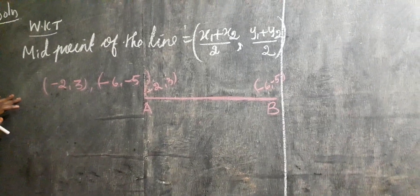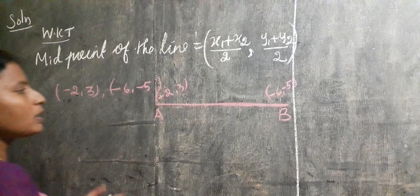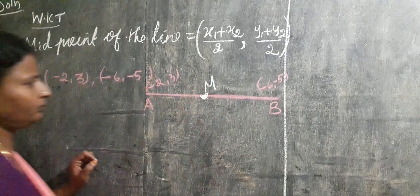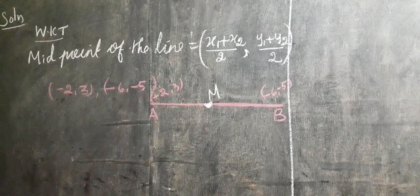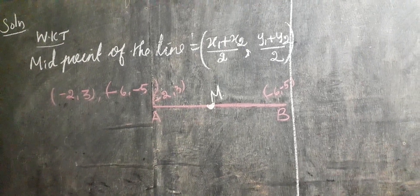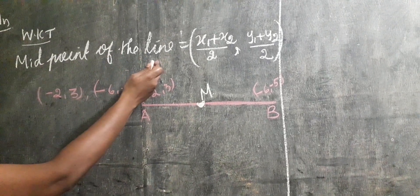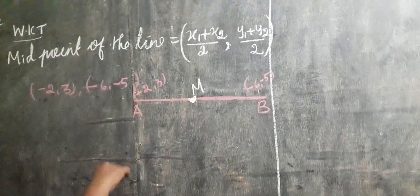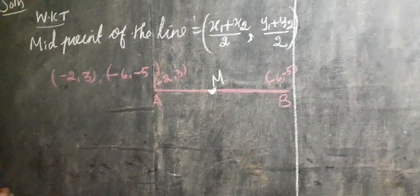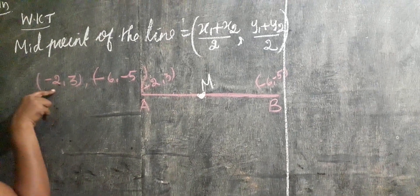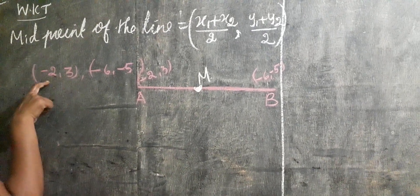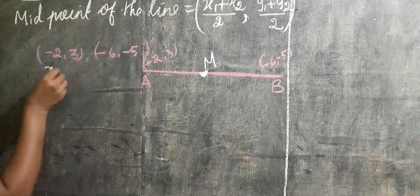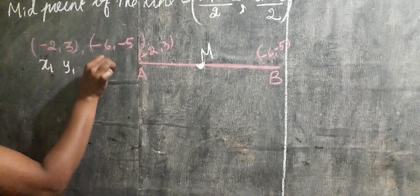You have to draw one line segment. This is the midpoint we have to find out. We know the midpoint formula and we have the two coordinates A and B. Coordinates means x coordinate and y coordinate — the first value is x, the second value is y — so x1, y1, x2, y2.